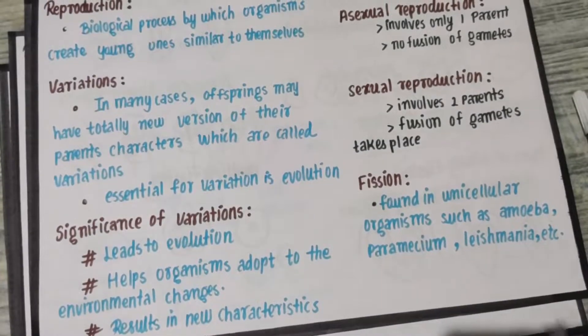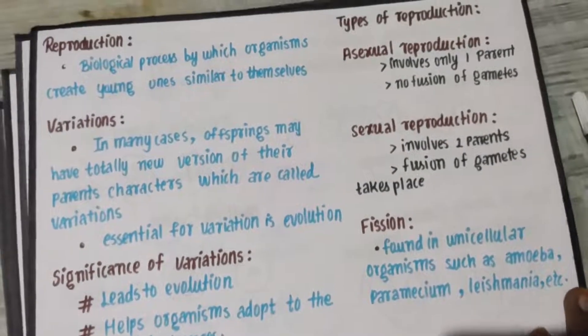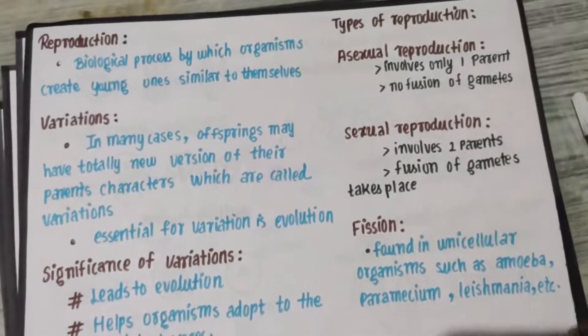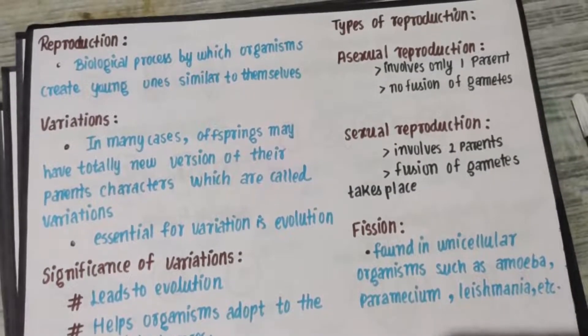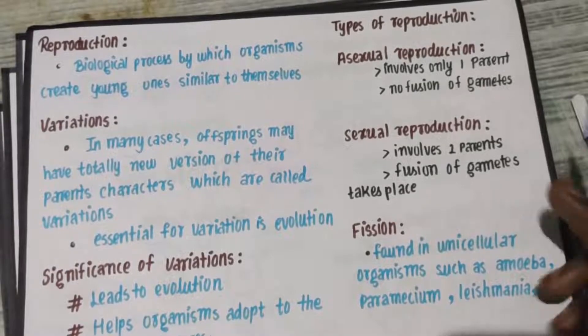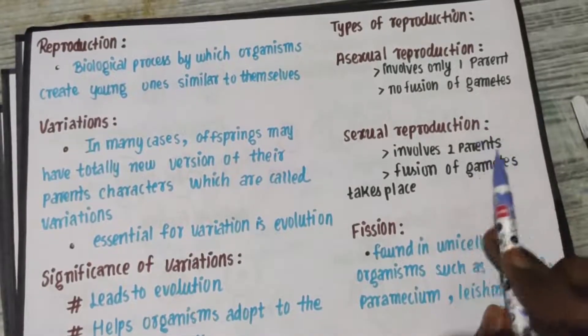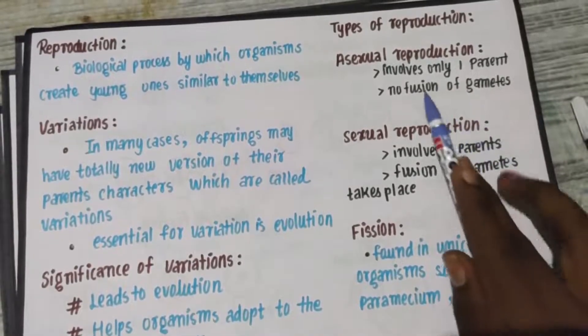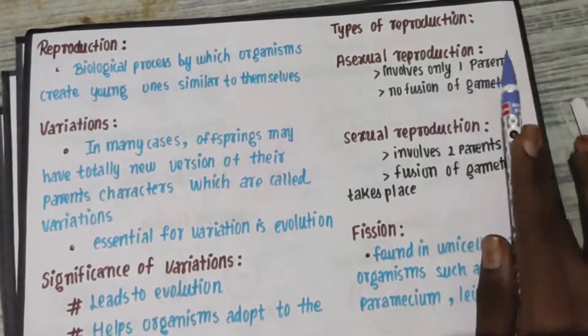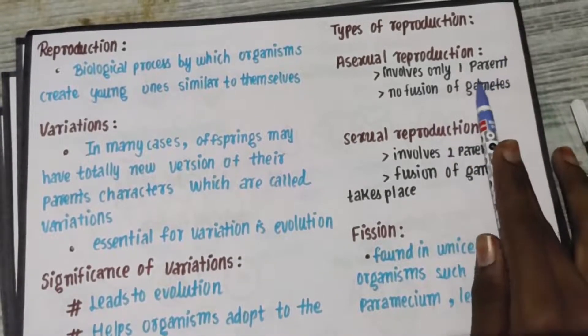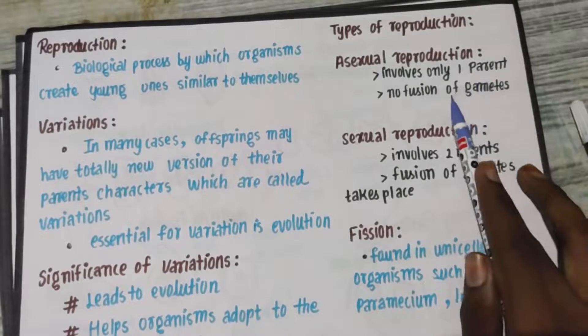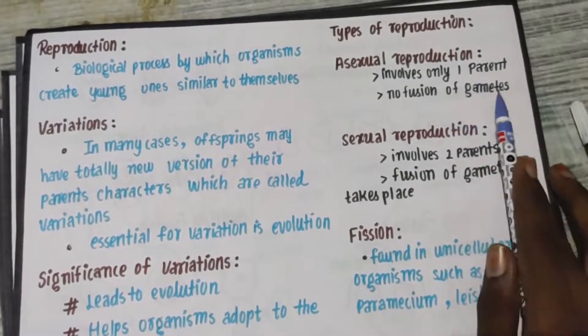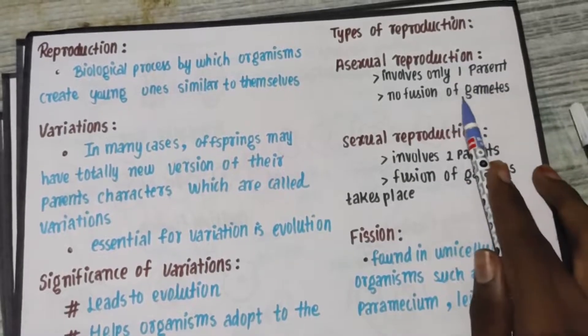Now we are going to understand the types of reproduction — Asexual Reproduction and Sexual Reproduction. In Asexual Reproduction, only one parent is involved and there is no fusion of gametes.